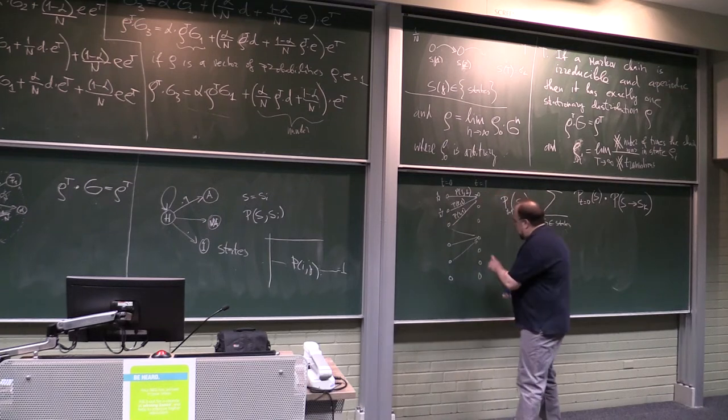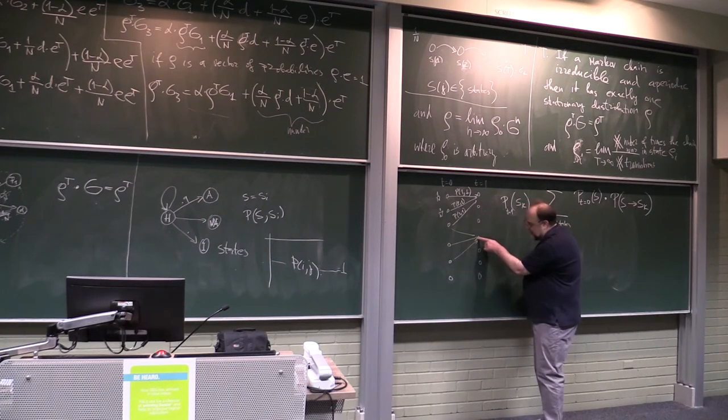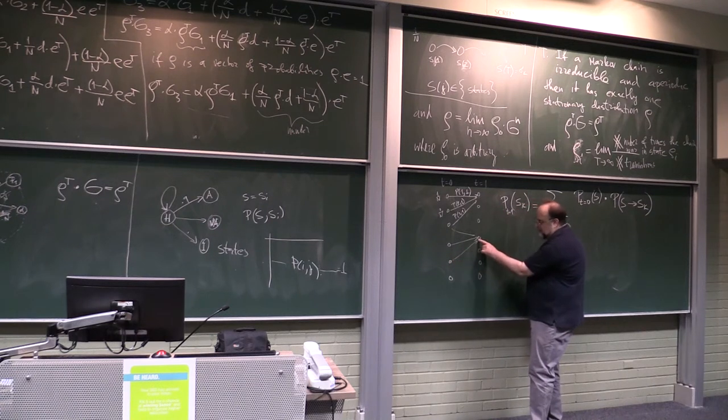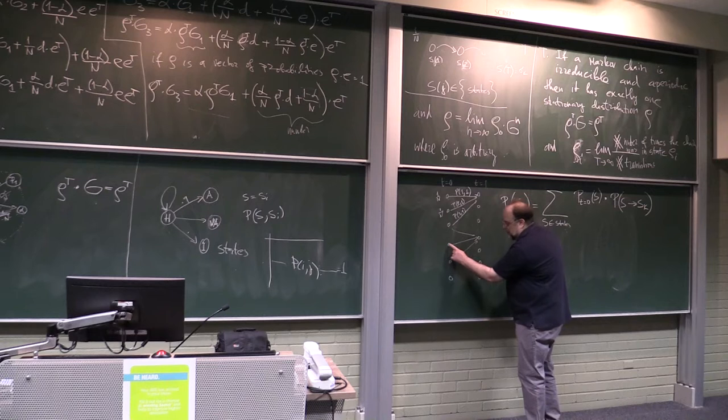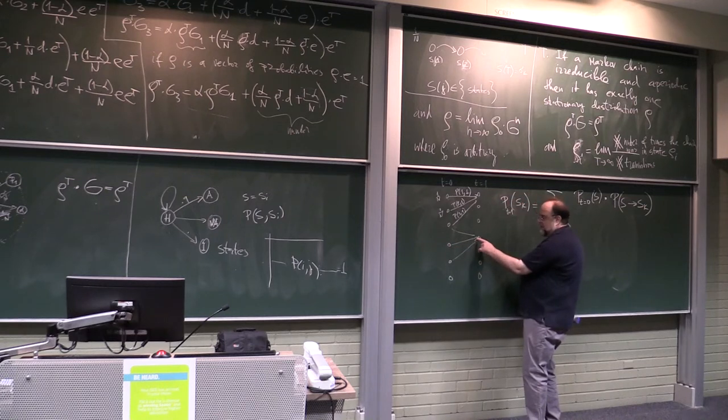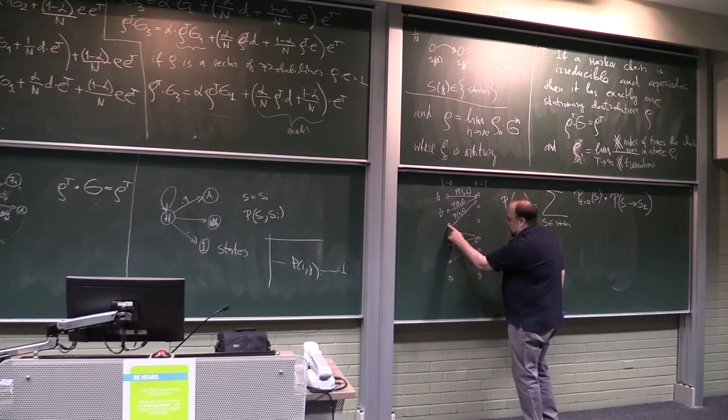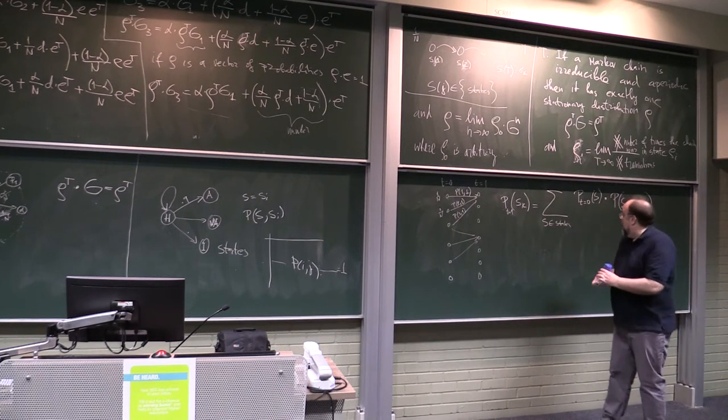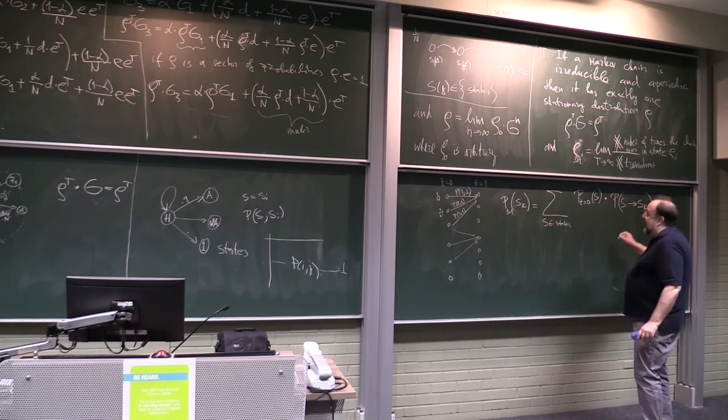So, probability to be in this state is equal probability that you started here times probability of transition, plus probability to be here times probability of transition, probability to be here times probability of transition, right? But what is that?